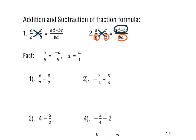Try to memorize that pattern. Two useful facts: negative A over B equals negative A over B, and A equals A over 1. We'll use these two facts for our operations of addition and subtraction of fractions.